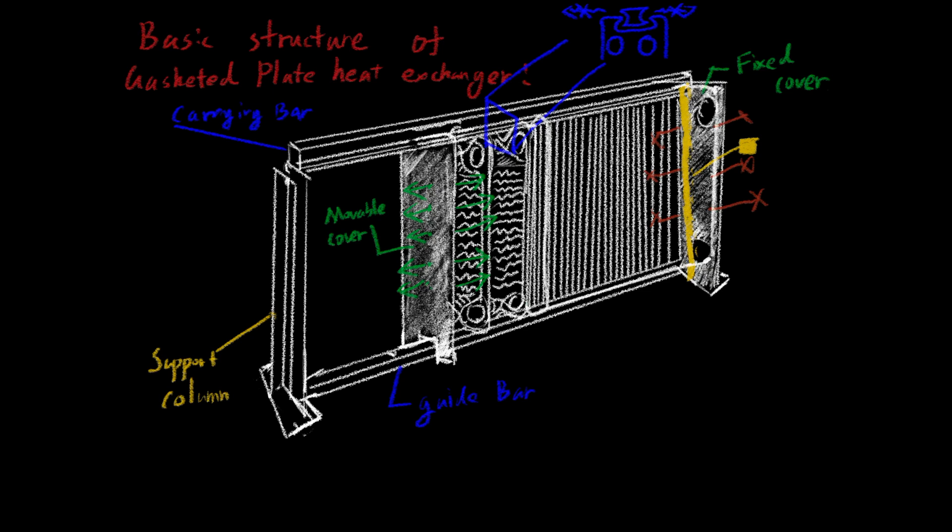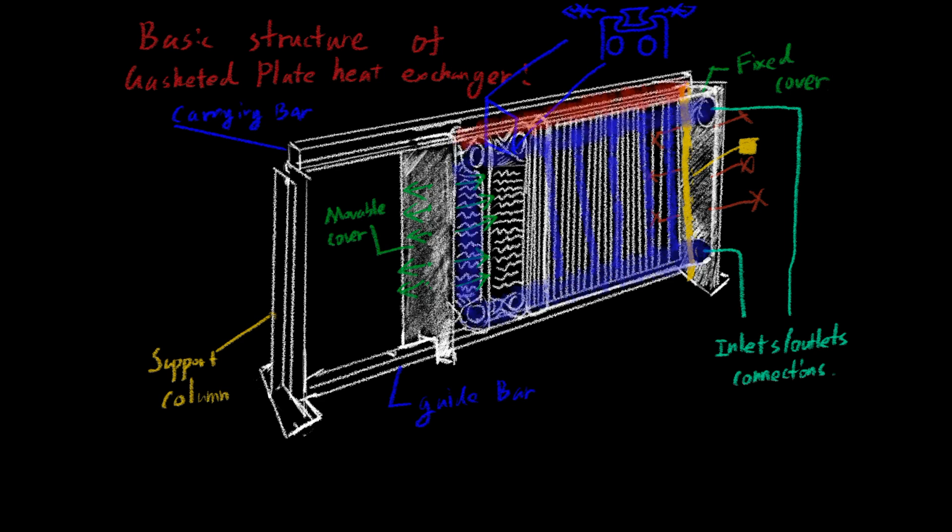Next, we have inlets and outlets connections. For example, cold water can enter one inlet from the bottom and after traveling through a set of plates, exit at the top. While hot water can enter the inlets from the top and after traveling through another set of plates, exit at the bottom. More detail will be provided in later videos.